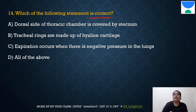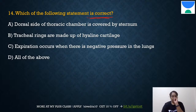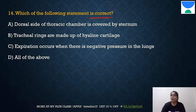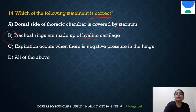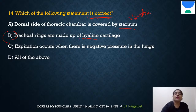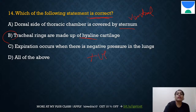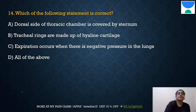Question 14: Which of the following statements is correct? The answer is B: tracheal rings are made of hyaline cartilage. The sternum is on the ventral side, not dorsal. And during expiration, there is positive pressure in the lungs, not negative.